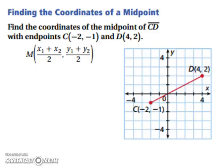Find the coordinates of the midpoint of CD with endpoint C at (-2, -1) and D at (4, 2). So we want to take the average of our x's, so we're going to add our x's together: -2 plus 4 divided by 2, and then we have -1 plus 2 divided by 2, and then we can simplify.